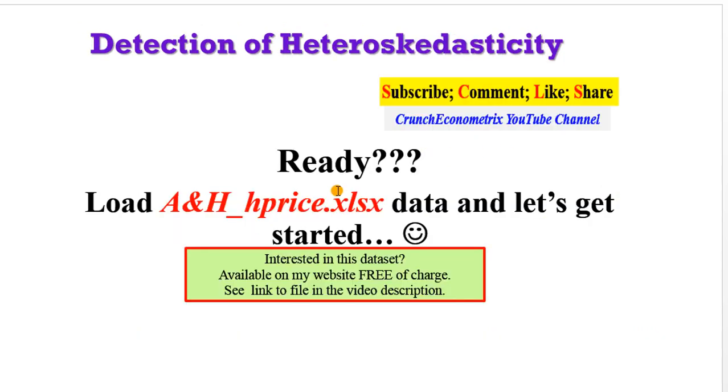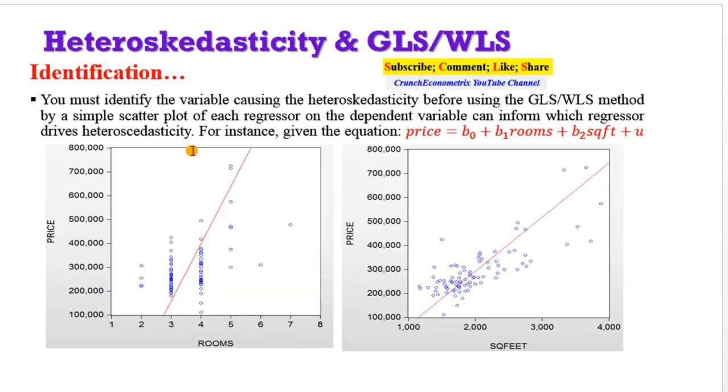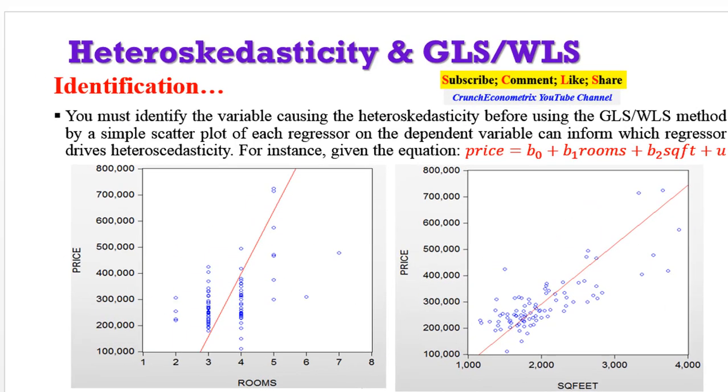So if you are ready, load your data and let's get started. And if you still want to use my data, I have put the link to the file in the video description. The file is located on my website. Click on the link and you get the file. Before we go into the analysis, recall during identification, we were able to show that rooms drive heteroskedasticity in the model. And likewise, square feet drives heteroskedasticity in the model. So this is to tell us that we now have a prior information about the structure of the variance in this particular model. So we are going to use both rooms and square feet as weights to correct for heteroskedasticity.